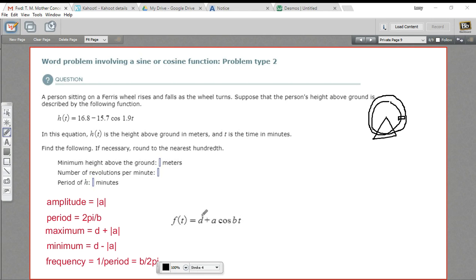So d, of course, is our vertical translation, and a is going to be our amplitude, or the absolute value of that is our amplitude. And so we can use this general form to figure out these things.